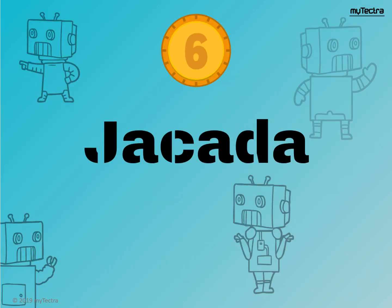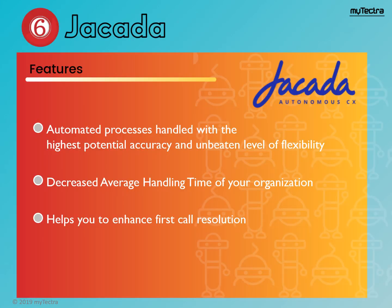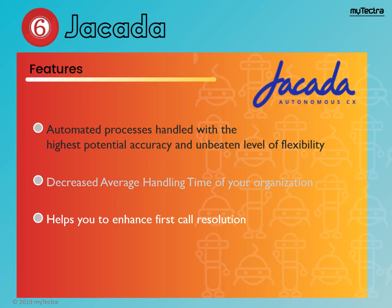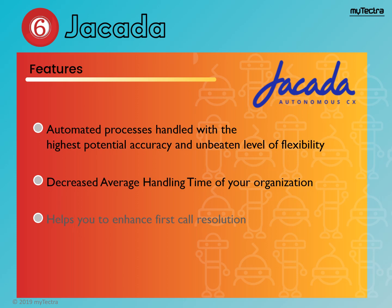Next, RPA tool number 6 is Jacada. Jacada is for establishing interactions, communication centers, and customer services. It assists in increasing accuracy, customer satisfaction, and productivity. It allows companies to automate time-consuming and error-prone redundant tasks. Features of Jacada: automated process handled with highest potential accuracy and unbeaten level of flexibility. Decrease average handling time of your organization.